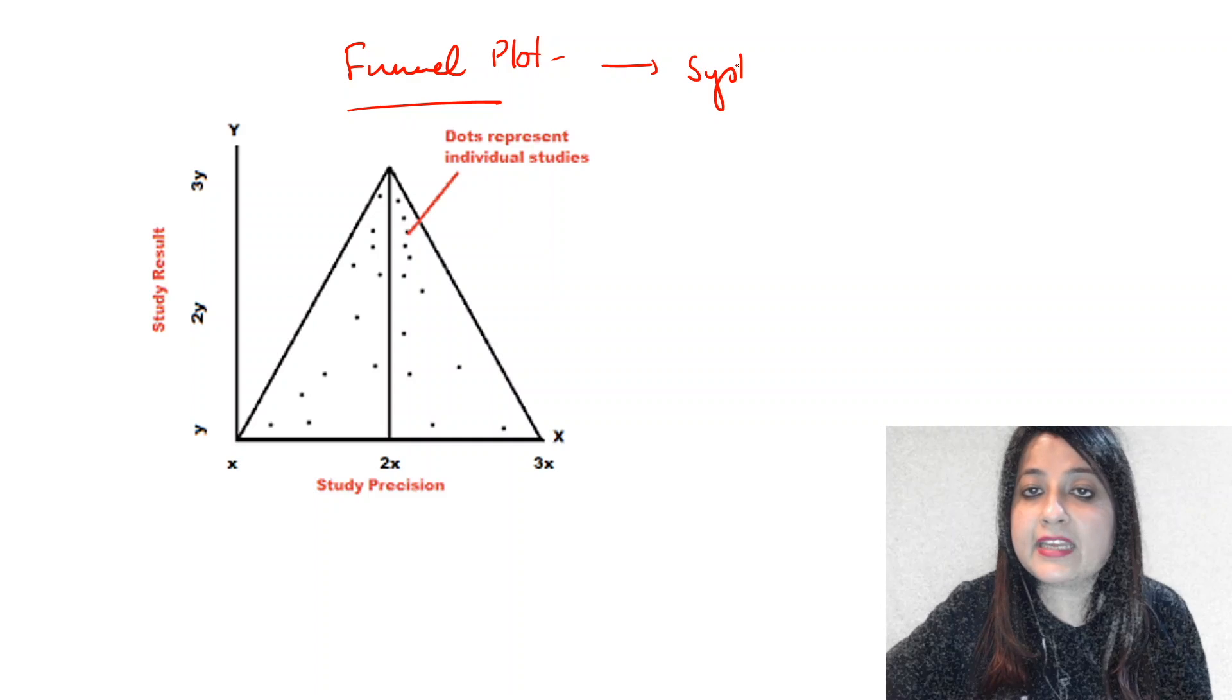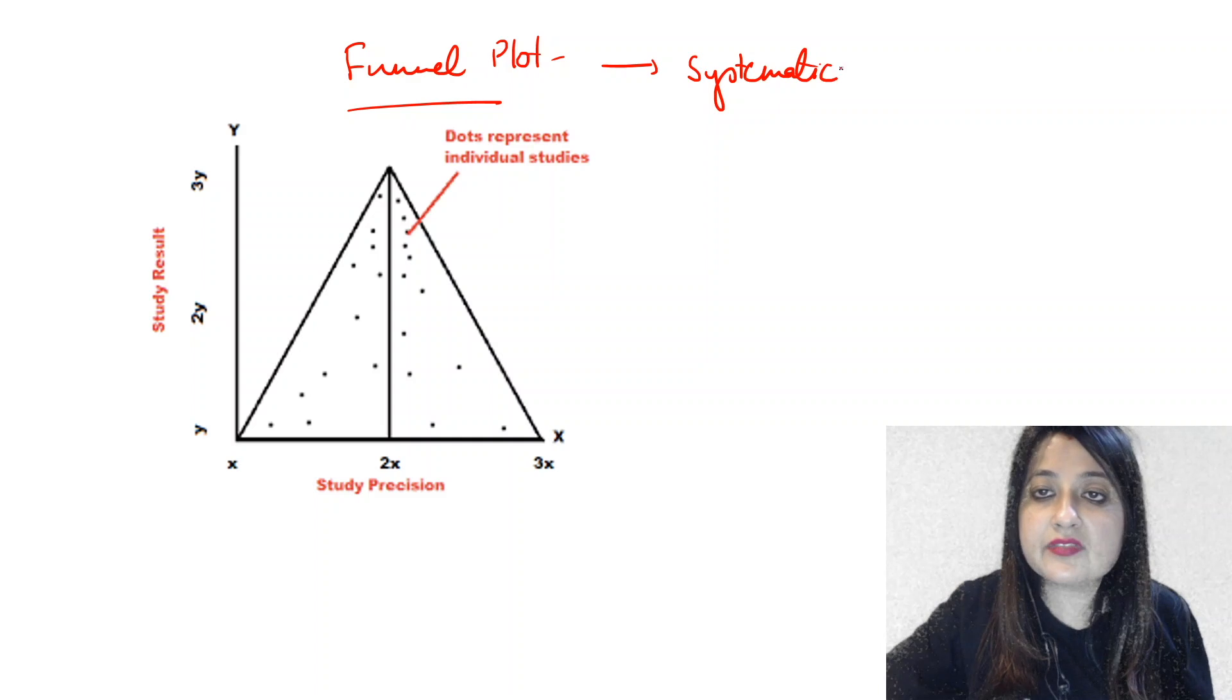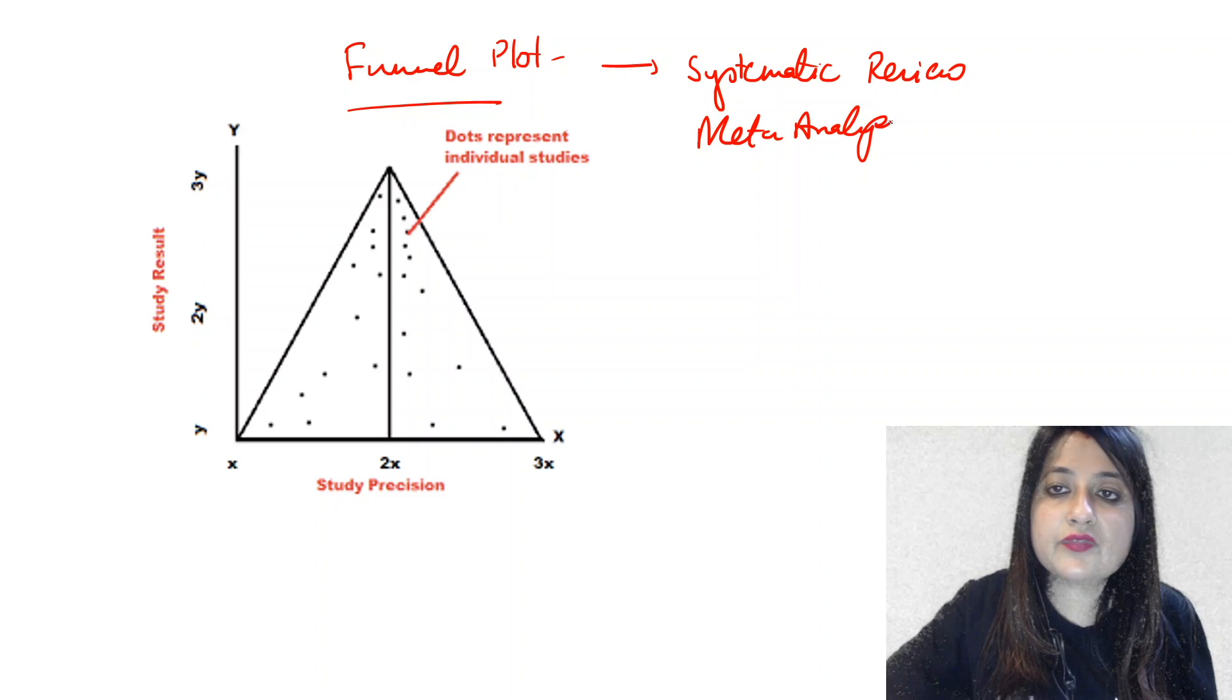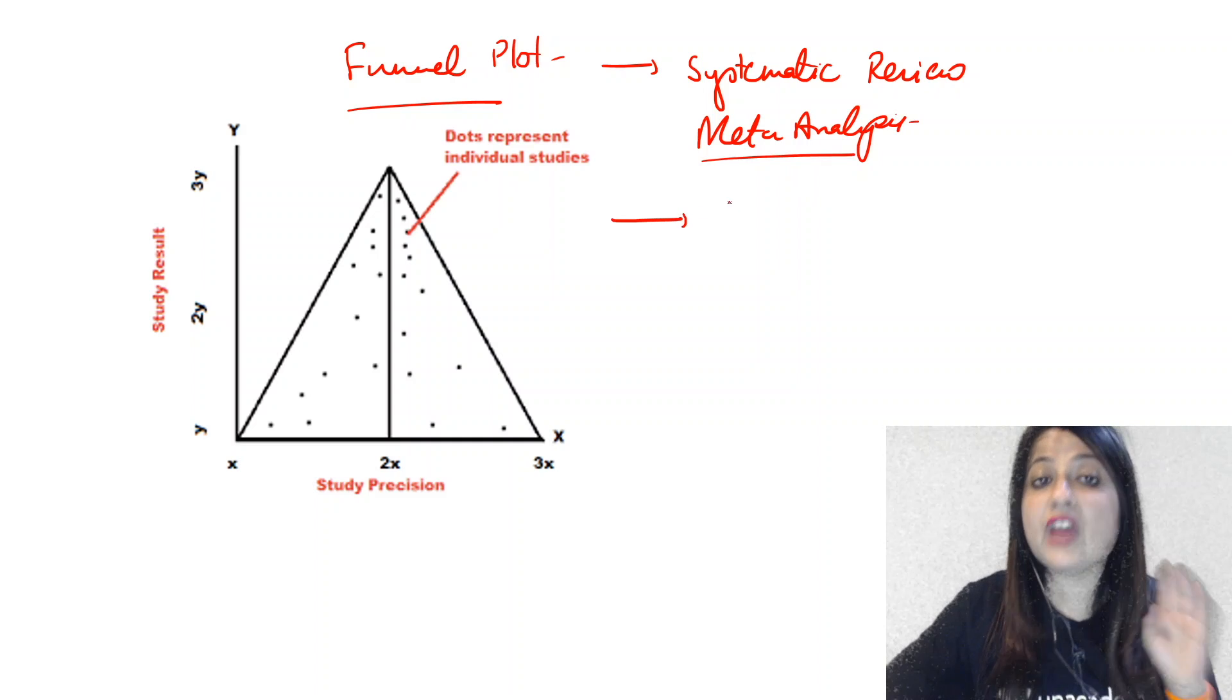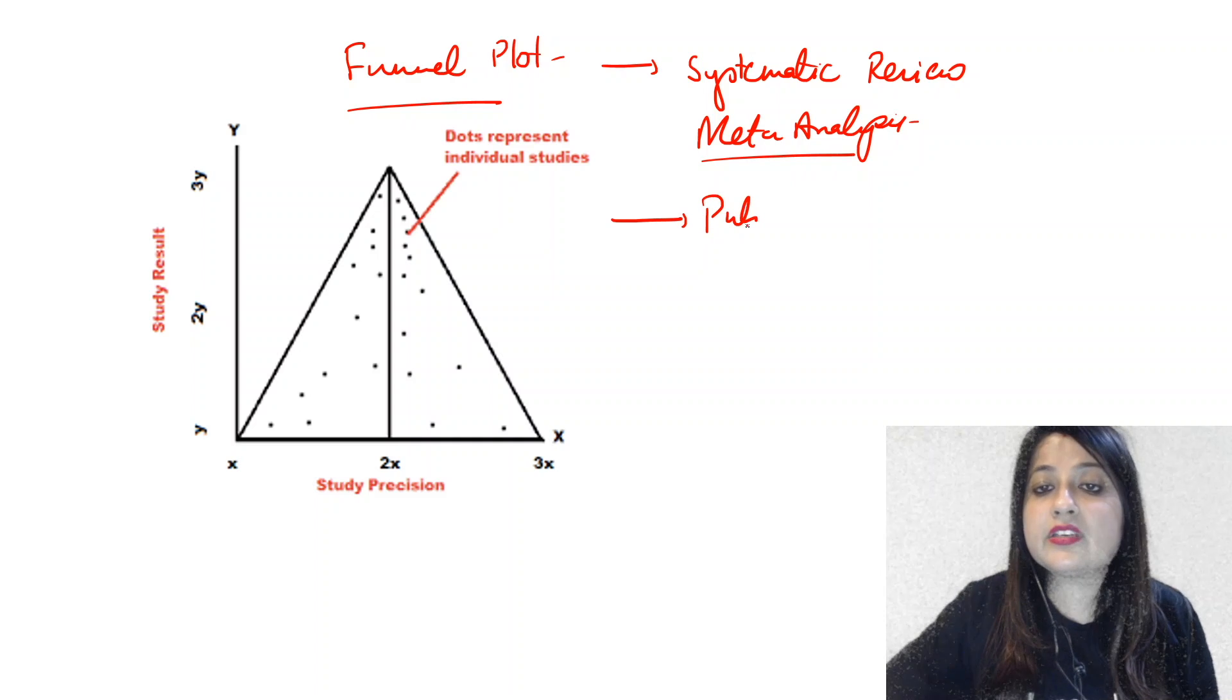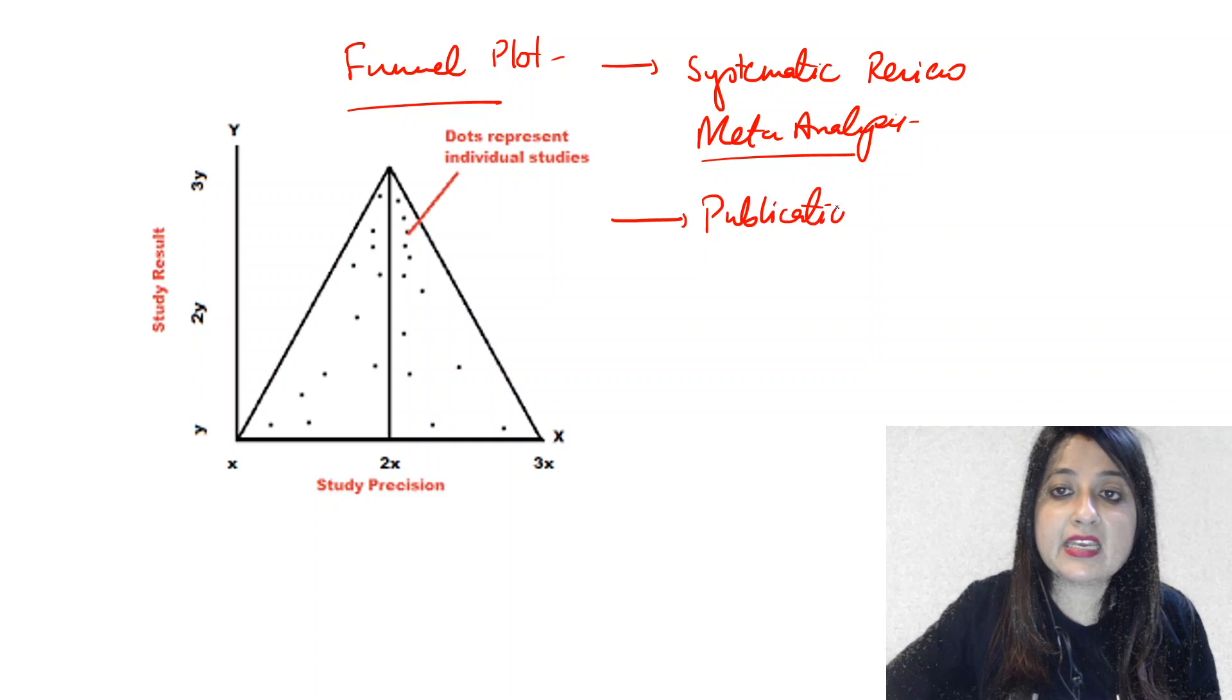It is drawn both in a systematic review. It is constructed both for a systematic review and for a meta-analysis. And what does funnel plot represent? Funnel plot represents publication bias. So it is used for representing publication bias.